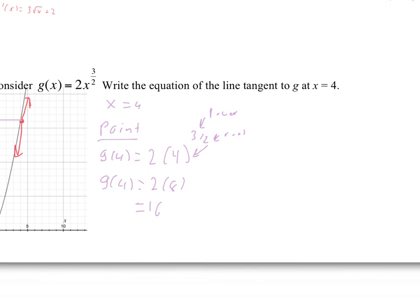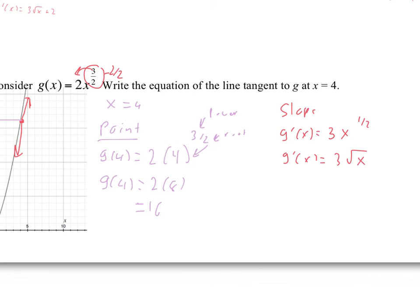Now for the slope: g prime of x — using the power rule, 3 halves times 2 is 3, x to the 1 half. So g prime of x equals 3 times the square root of x. Evaluating at x equals 4: 3 times the square root of 4 equals 3 times 2 equals 6. Now we can write the equation of the tangent line: y minus 16 equals 6 times x minus 4, where the y value of the point is 16, the x value is 4, and the slope is 6.